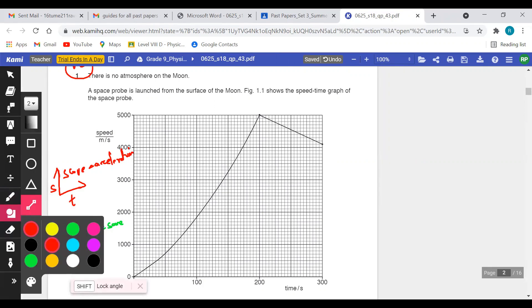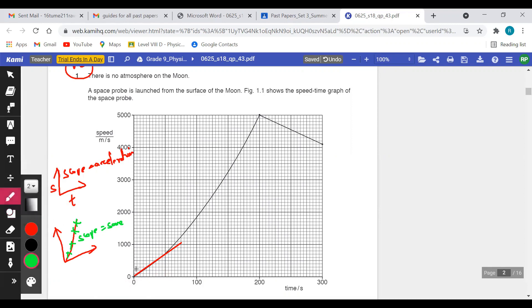I can see that till 50 seconds the slope is a straight line, and after 50 seconds the slope started becoming a curve. So till 50 seconds it is a uniform acceleration, after that...